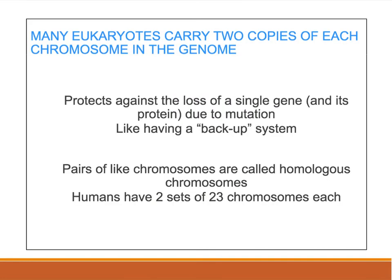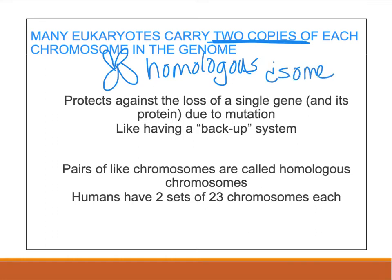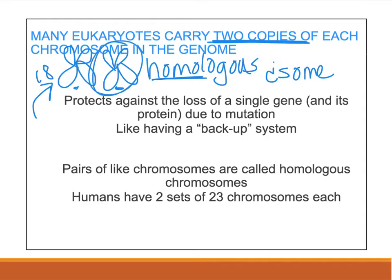Eukaryotes have two copies of each chromosome. For every single chromosome, you have two of them. We call these homologous — meaning the same. So your two pairs of chromosomes, say chromosome 18 — these two are the same. We're in the business of protecting DNA, so having two homologous chromosomes is like a backup system. If something happens to one, your DNA is preserved in the other. We have two sets of 23, so 46 chromosomes total in every single body cell.